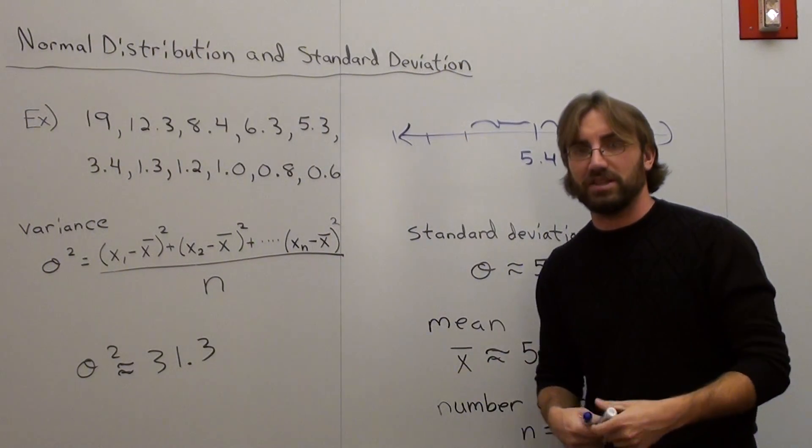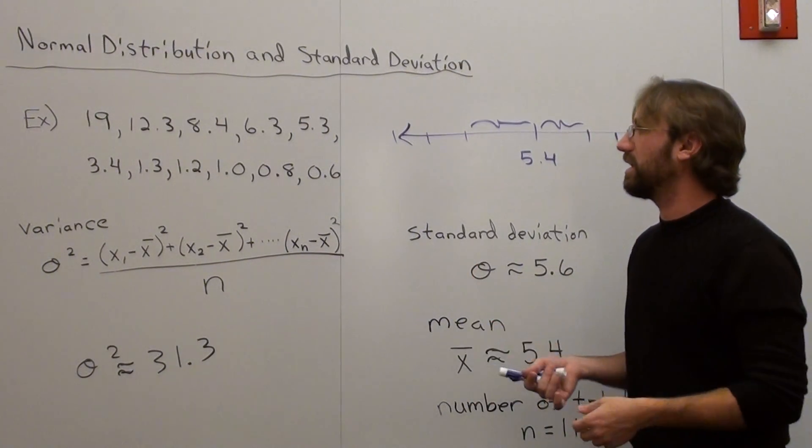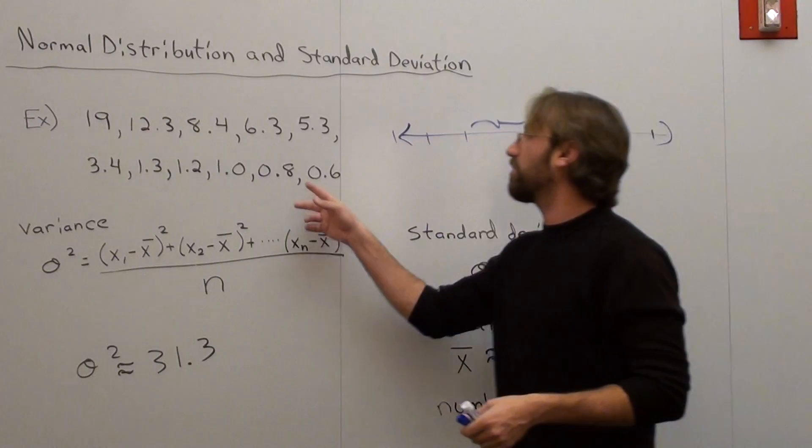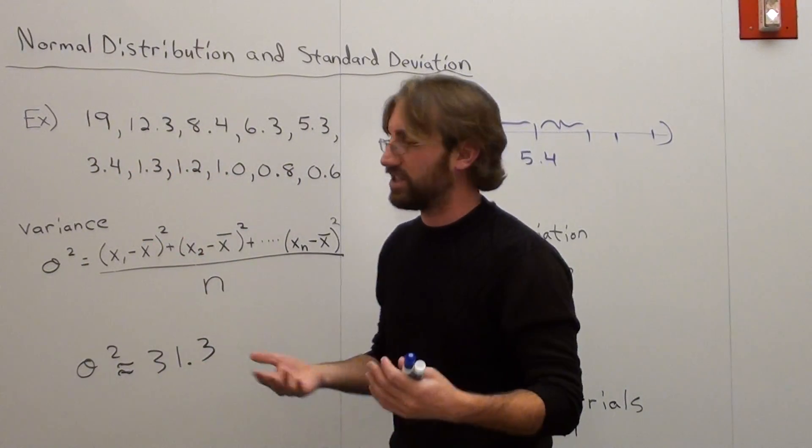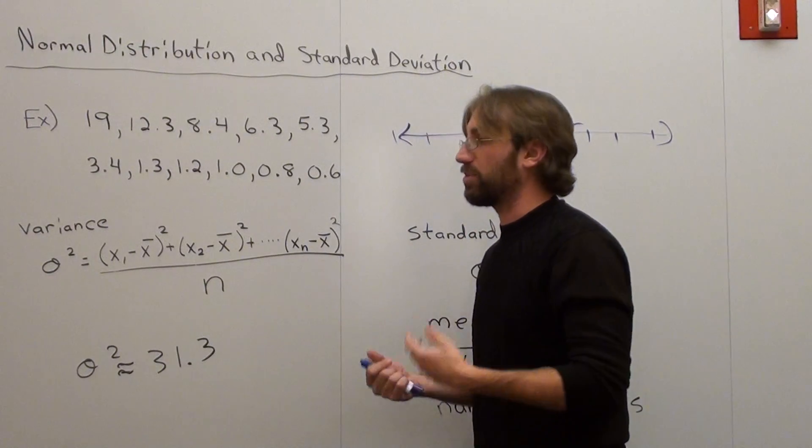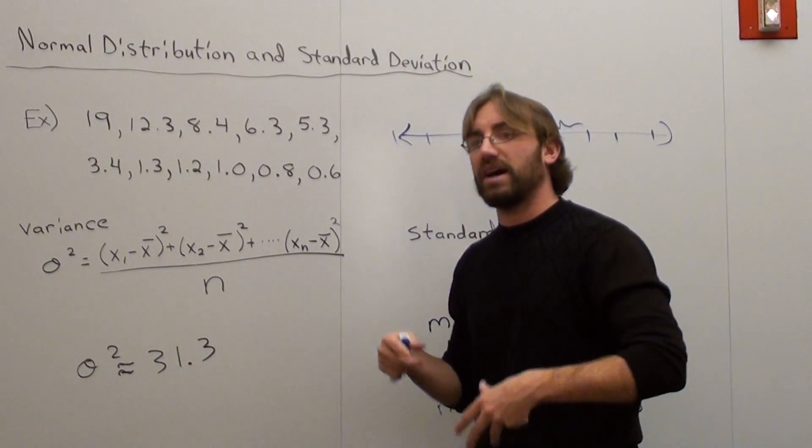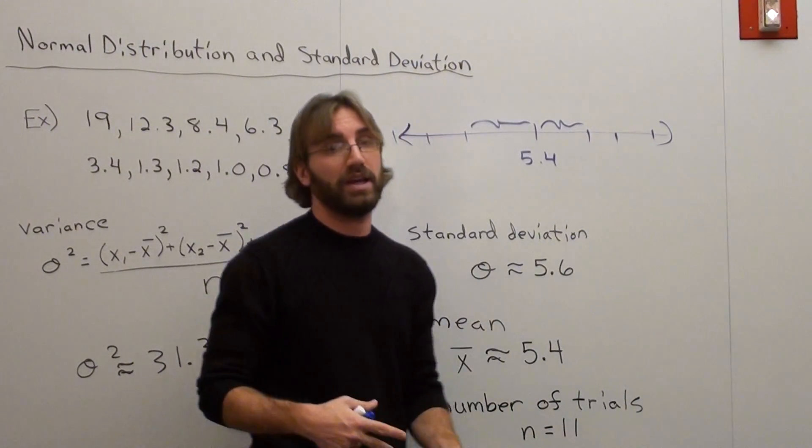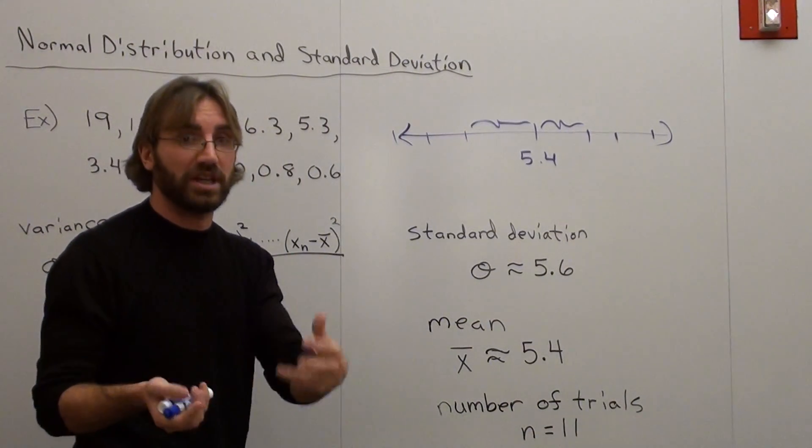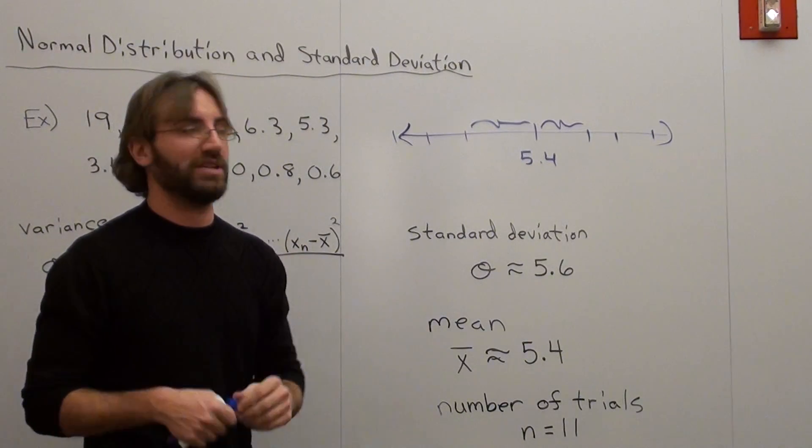Basically all that means is where the data is expected to be, and it does fluctuate a little bit. These 0.6s, 0.8s, and these 19s do fluctuate the data. It's just that simple. Nothing's going to be perfect. If I took more data, obviously I'd have a more accurate standard deviation. In this case, the standard deviation tends to be very high, but that gets fixed when you take much better data.